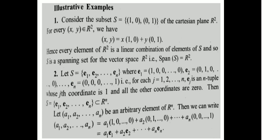Next example: Let S = {E₁, E₂, ..., Eₙ} where Eⱼ is an n-tuple whose j-th coordinate is 1 and all other coordinates are 0. Then S is a subset of Rⁿ, where each Eⱼ is an n-tuple. Let (a₁, a₂, ..., aₙ) be an arbitrary element of Rⁿ.